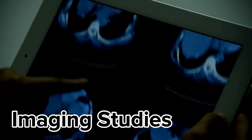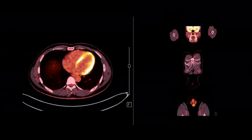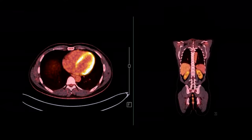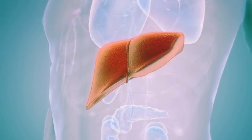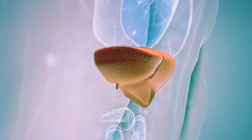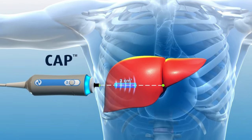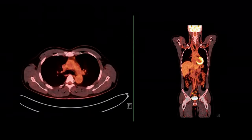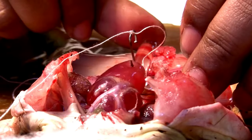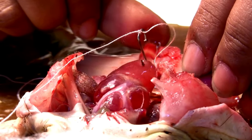Imaging studies serve as invaluable tools in the diagnostic arsenal. Ultrasound, CT scans, and MRI scans can detect liver abnormalities such as increased fat accumulation and changes in liver size and texture. These non-invasive techniques offer a window into the liver's inner workings. FibroScan is a cutting-edge technology using transient elastography to measure liver stiffness, providing insights into liver fibrosis — a hallmark of advanced NAFLD. This rapid, painless procedure aids in risk stratification and treatment planning.